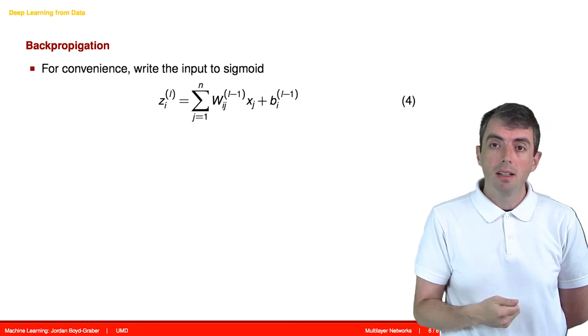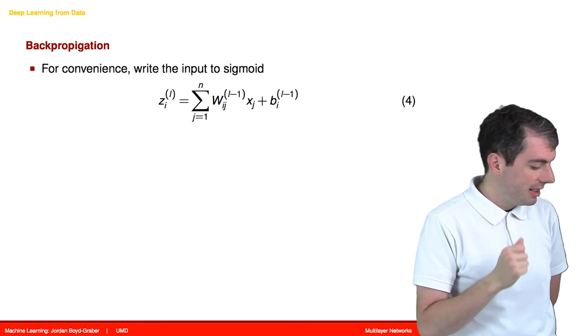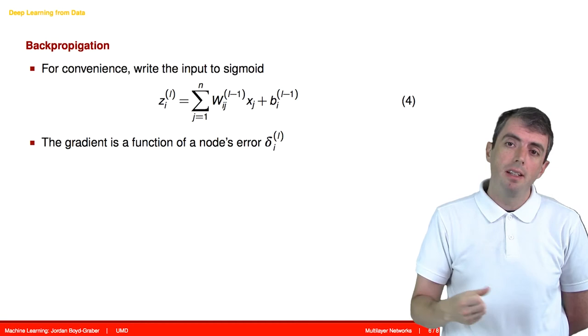Let's write the input to that node's sigmoid function as z_i^L. So the algorithm that we use to optimize this function tries to find the direction that will decrease the error. This is the gradient.